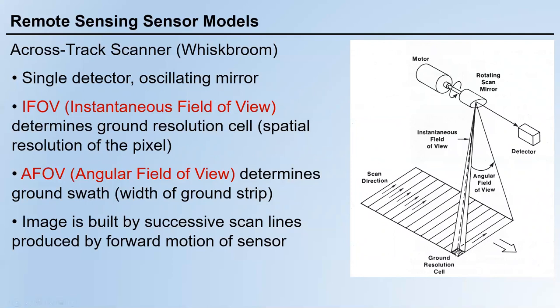For example, if the small cell being monitored is 30 meters by 30 meters, the spatial resolution of your sensing system is 30 meters. This means this cell is the smallest unit detectable by this sensor — in other words, each pixel in your image covers a 30-meter by 30-meter real-world area on the ground.